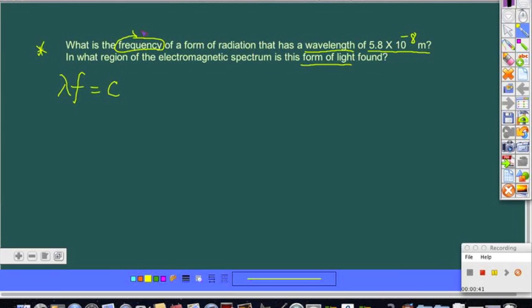So if we're looking for frequency, what we're going to do is try to isolate frequency on one side of the equation, which means I will have to divide by wavelength on each side to isolate my frequency. Frequency will equal the speed of light divided by the wavelength of the wave.